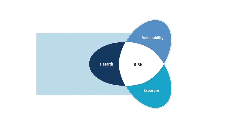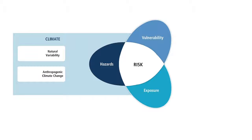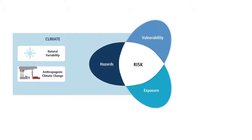The frequency and intensity of hazards are affected by both natural variability and anthropogenic climate change. Natural variability is our climate's natural tendency to vary from day to day or year to year. Anthropogenic climate change is different — people are changing the climate, especially through the emissions of heat-trapping gases. This human-caused climate change is warming the air and the oceans, melting snow and ice, and changing the occurrence of extreme events like heat waves and heavy rain.